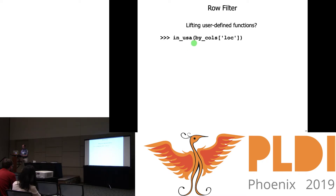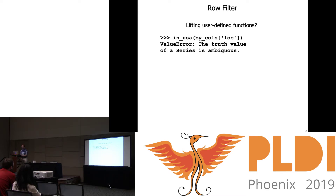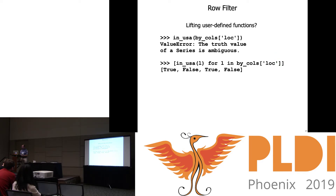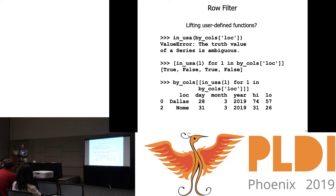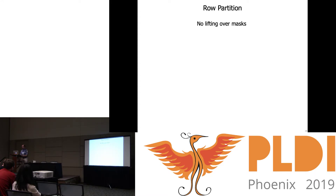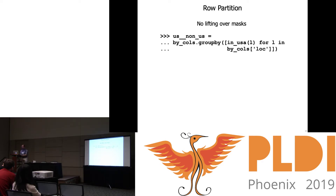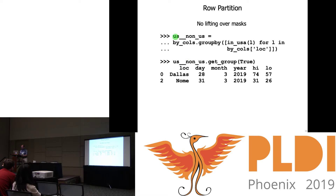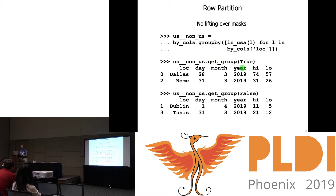We can also filter out particular rows. In Pandas, we start by building a series of booleans saying which rows correspond to readings from Dublin, then use the index operator with that series to get only the rows corresponding to true elements. This looks great until you try to use your own selector function — the in-USA check does not really lift and instead we get an error message. So we end up writing a hand-written loop construct; in Python the preferred method is a list comprehension. To generalize from filtering to partitioning, there is a special-purpose method called group_by.